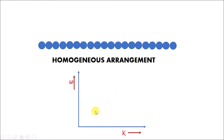In our context, what we want to know is how the angular frequency of lattice vibrations within a solid is affected by the wavelength or the wave vector of the waves. So we want to find the nature of the curve between omega and k.